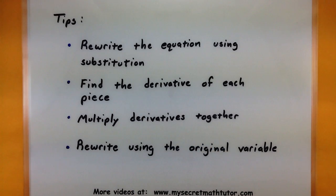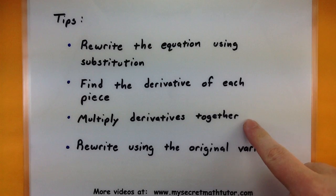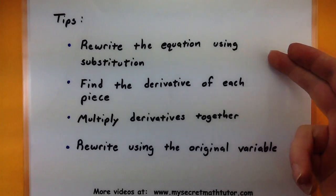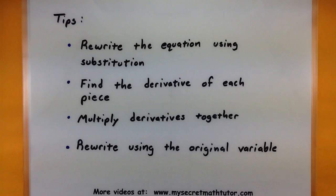We'll definitely want to find the derivative of each of those individual pieces that we break it down into. The key is that we'll multiply each of those derivatives together so that we'll get the derivative of our overall function. Then to make sure that everything is okay, we'll rewrite it using the original variable of just whatever we start off with. Seems like a lot of stuff to go through, but you'll see when we get into the examples, it's actually pretty straightforward.